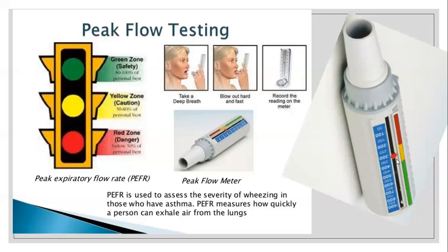The Peak Flow Meter indicates the condition of your lungs. It is used to assess the severity of wheezing in those who have asthma, and measures how quickly a person can exhale air from the lungs. If you do not take medication or avoid trigger materials, the reading will fall into the red danger zone.